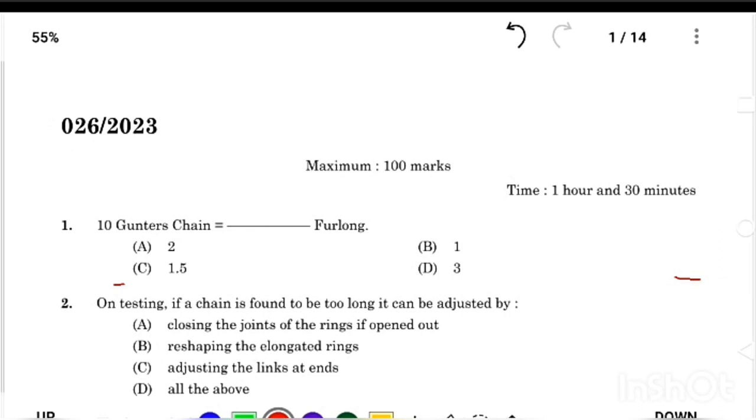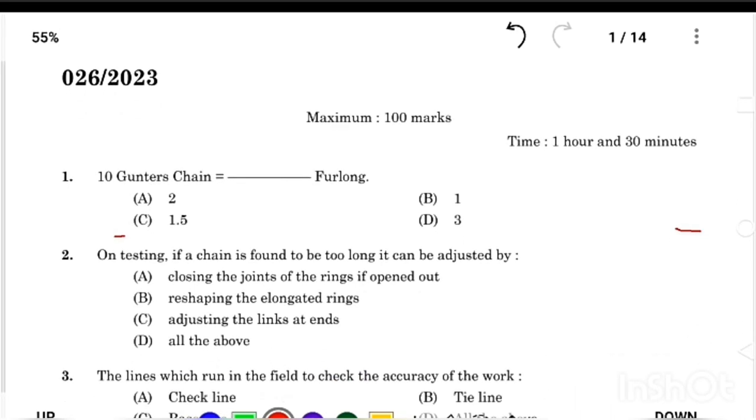026 2023 Overseer, Kerala State Cashew Development Corporation, Provisional Answer Key. 10 Gunter's Chain dash for long, Answer Option B.